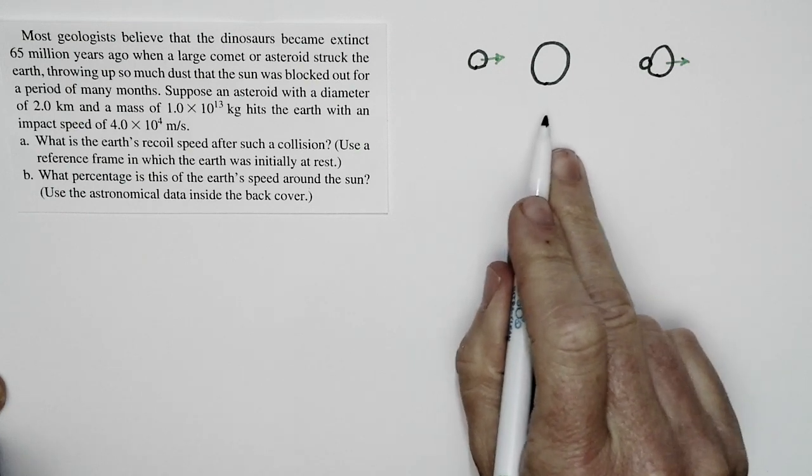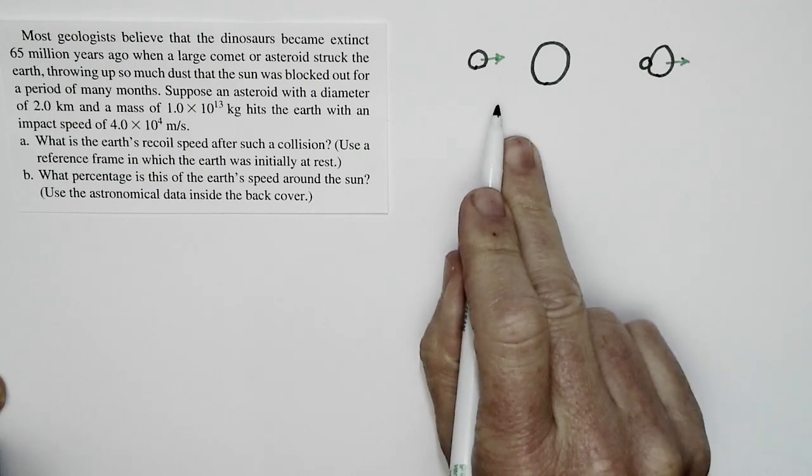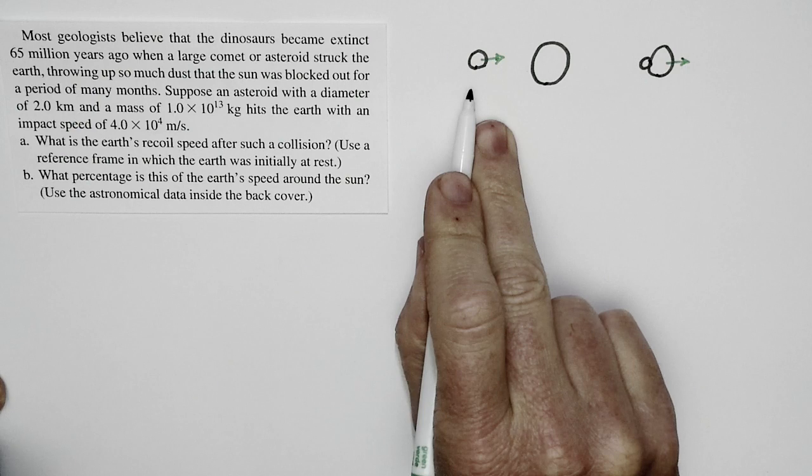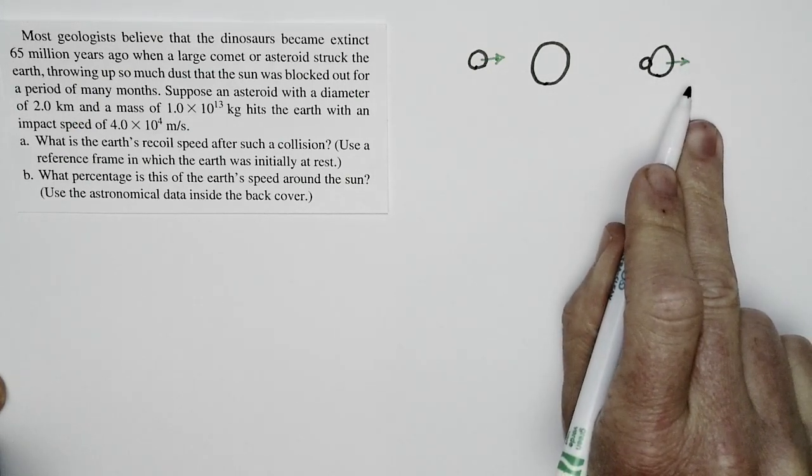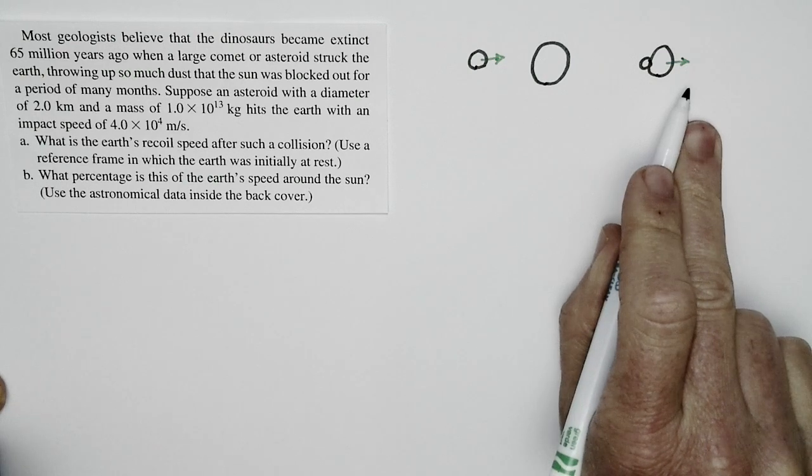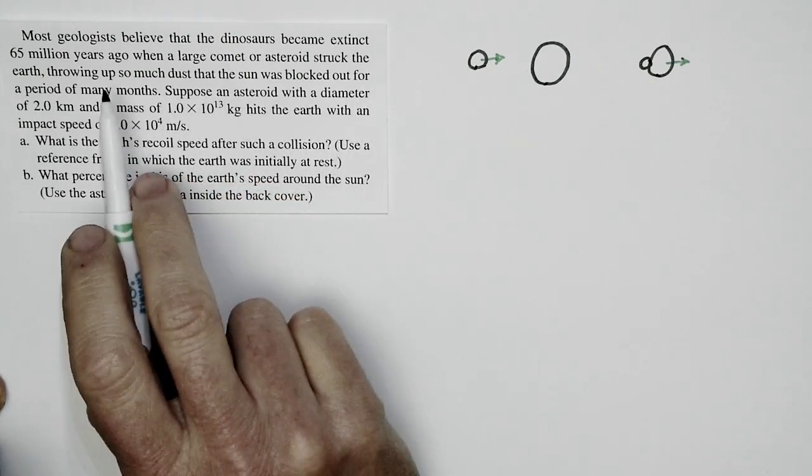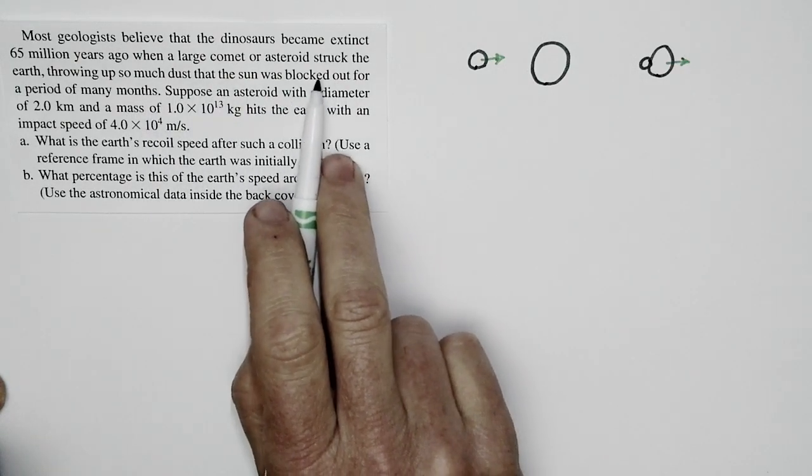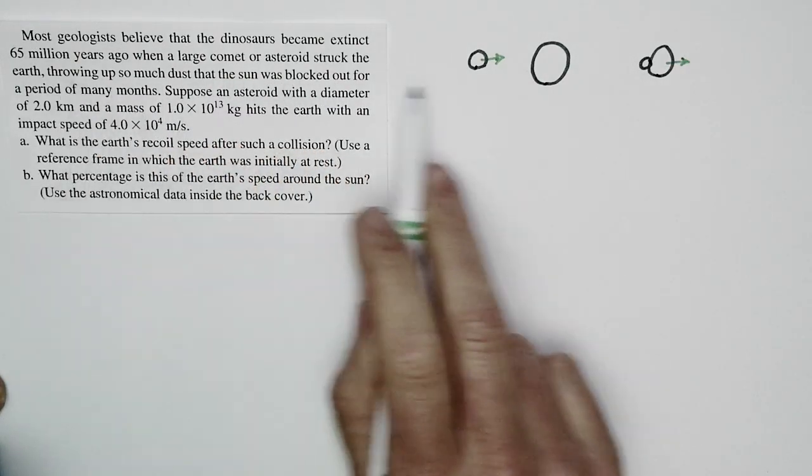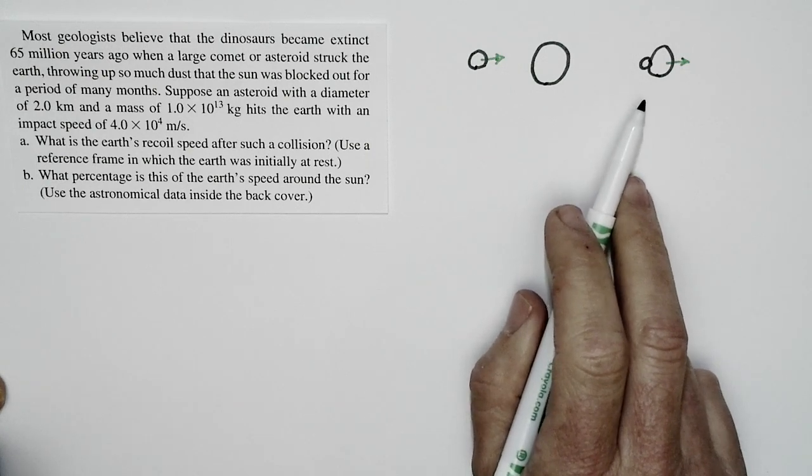I've heard people suggest that this was the problem, basically like a pool ball coming in and hitting another ball—boom, the two of them move off together, knocks the Earth out of its orbit. Not so, as we'll see with this problem. As a matter of fact, that's alluded to in the problem statement, because the issue is that this impact throws up so much dust, not that the Earth has a huge recoil speed.